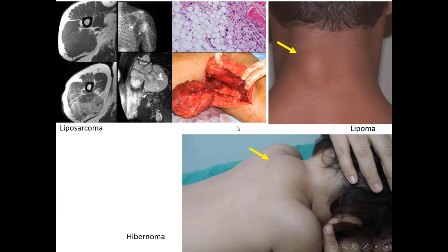Adipose tissue can also produce tumors in our body — the benign tumor is called lipoma and the malignant tumor is called liposarcoma. You can see liposarcoma in the axillary area of this person. Brown adipose tissue can produce a benign tumor called hibernoma.